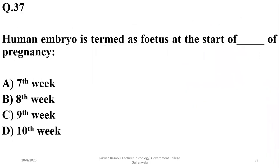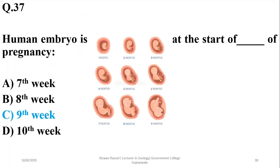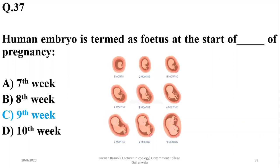Number thirty-seven: a human embryo is termed a fetus at the start of the ninth week, or the third month of pregnancy — that is, after eight weeks or at the start of the third month, after the completion of two months. The human embryo is then termed a fetus.